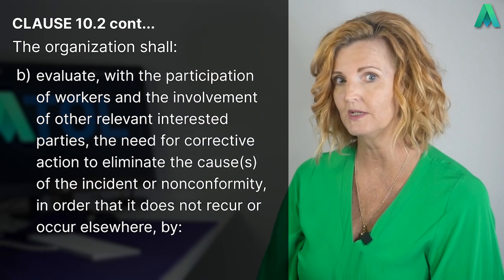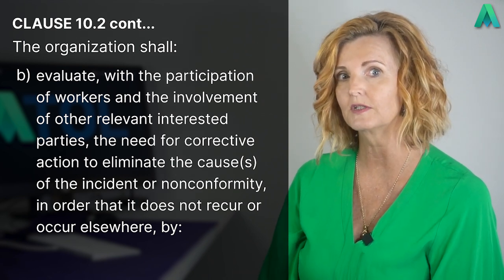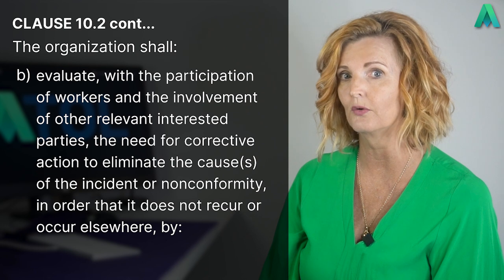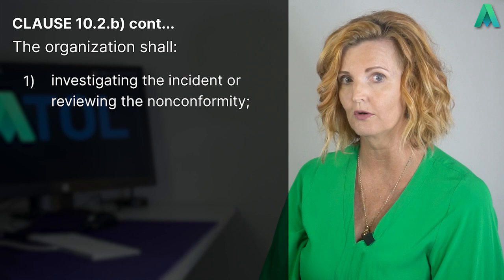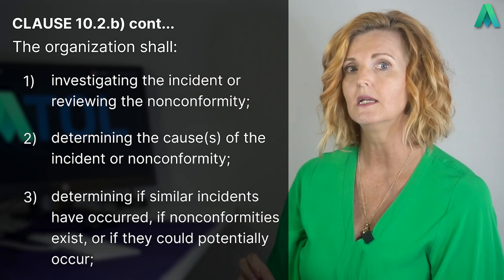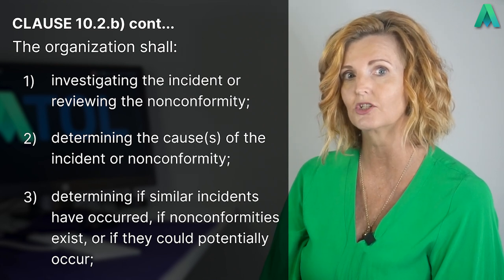The next part of the clause is where we look at the long-term fix or corrective action. The clause states that the organisation shall B. evaluate, with the participation of workers (see Clause 5.4) and the involvement of other relevant interested parties, the need for corrective action to eliminate the cause or causes of the incident or non-conformity in order that it does not recur or occur elsewhere by: one, investigating the incident or reviewing the non-conformity; two, determining the cause or causes; three, determining if similar incidents have occurred, if non-conformities exist, or if they could potentially occur.